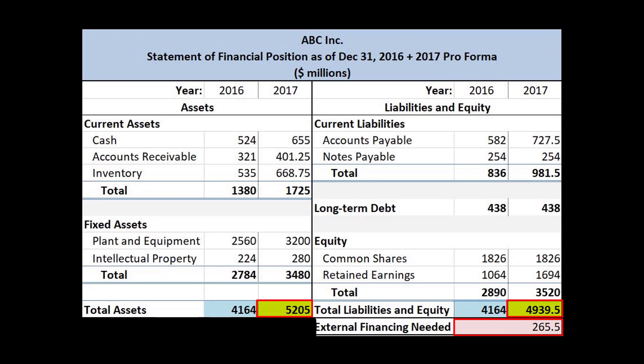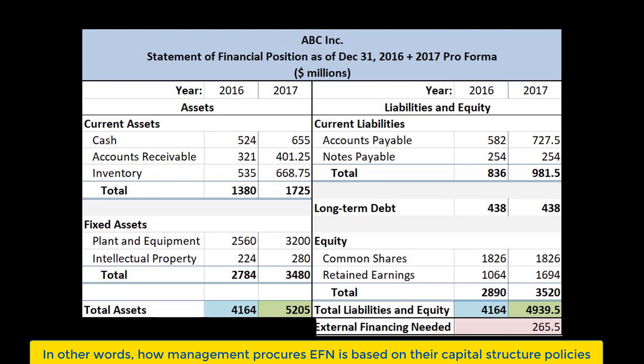When we do this, we get $265.5 million. Restating it in a different way, this means that in order to be able to support the increased sales, we will need to raise $265.5 million through debt and/or equity financing. This is a decision for management to make based on their preferences and goals. For example, if management wants to maintain the same net working capital, they might be inclined to take on only an amount of short-term debt which corresponds with the increase in short-term assets.